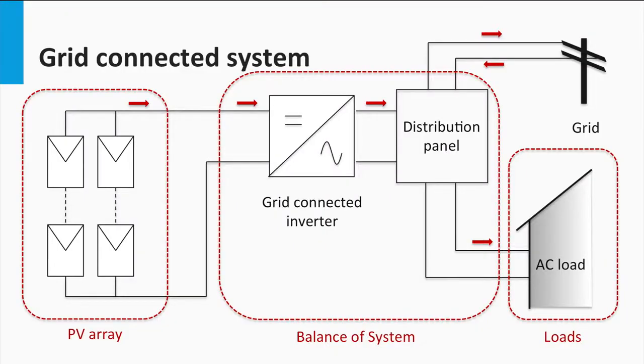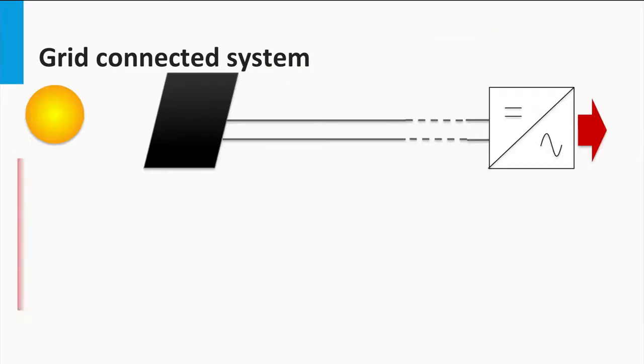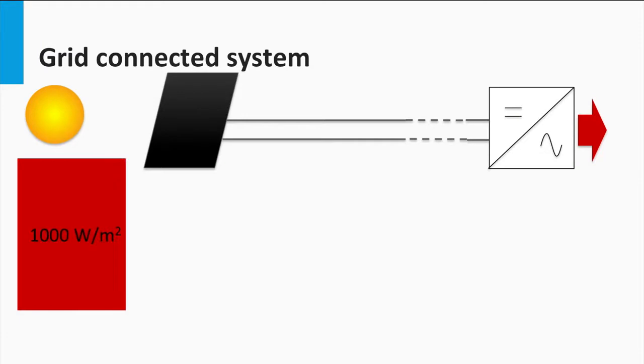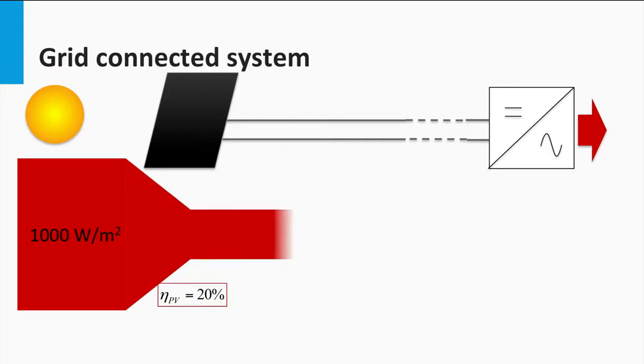In this grid connected PV system schematic, you see the various system components. Let's walk through the system to see the efficiency loss at each stage. I will suppose some efficiency values for each component so that we can get a rough estimate of how the system efficiency might look like. Let's assume an AM 1.5 irradiance levels and that the PV array is 20% efficient. Therefore the power density present at the output of the PV array is 200 watts per square meter.